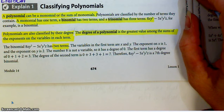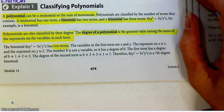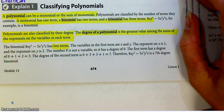Polynomials are classified by the number of terms that they contain. A monomial — mono means one — has one term. A binomial, because bi means two, has two terms. A trinomial has three terms, etc.